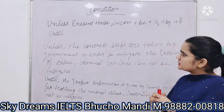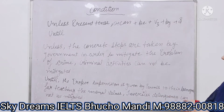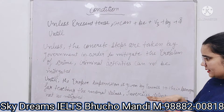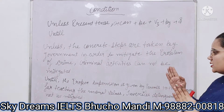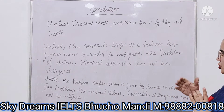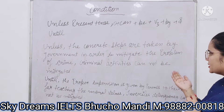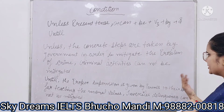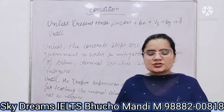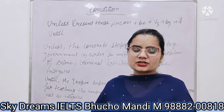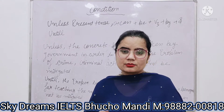Today we will discuss 'unless' — unless is used as a conjunction. For example: 'Unless concrete steps are taken by the government in order to mitigate the problem of crime, the criminal activities cannot be mitigated.' This means: unless the government takes steps, the crime problem cannot be mitigated. So unless sets up a negative condition where the result in the main clause cannot happen without the condition being fulfilled.